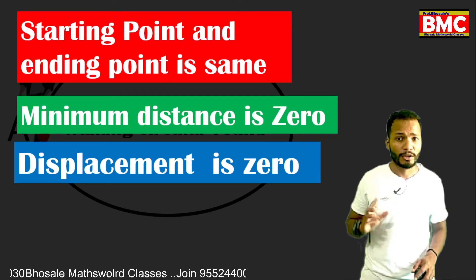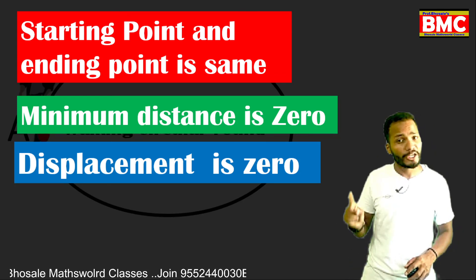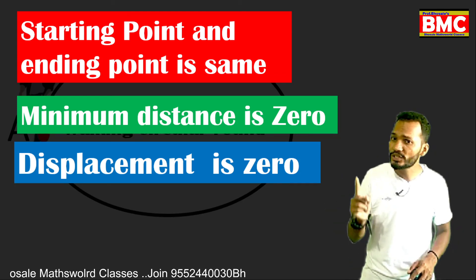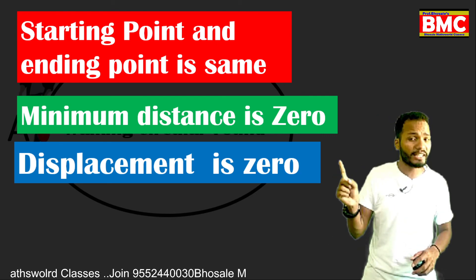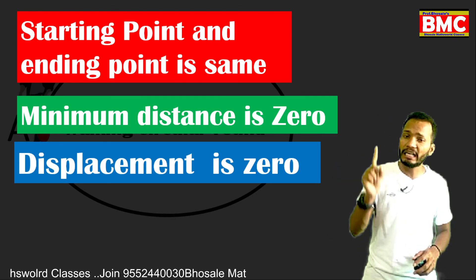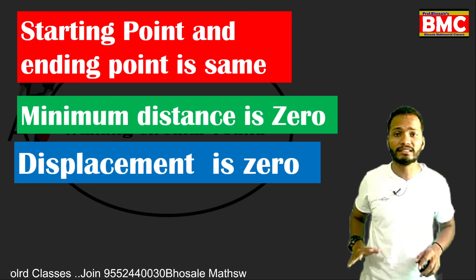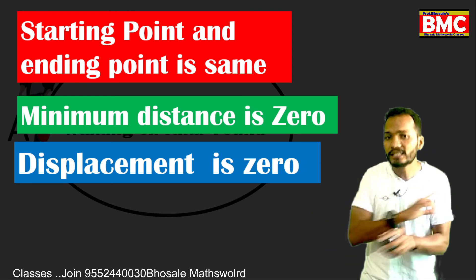So when the starting point and ending point are the same, displacement is zero. We have now covered distance and displacement. Next, we will learn about speed and velocity.